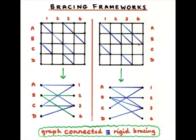And whenever there's a brace, we put in a line. So A1 is braced, so there's a line from A to 1. C3 is braced, so there's a line from C to 3 here. B2 is braced, so there's a line from B to 2 and so on. So you've got this.